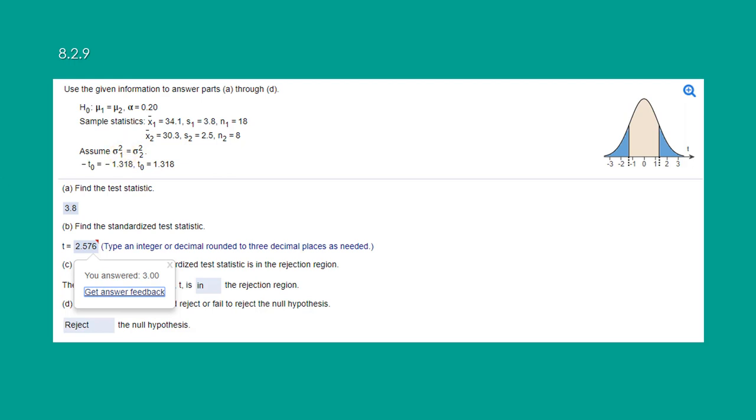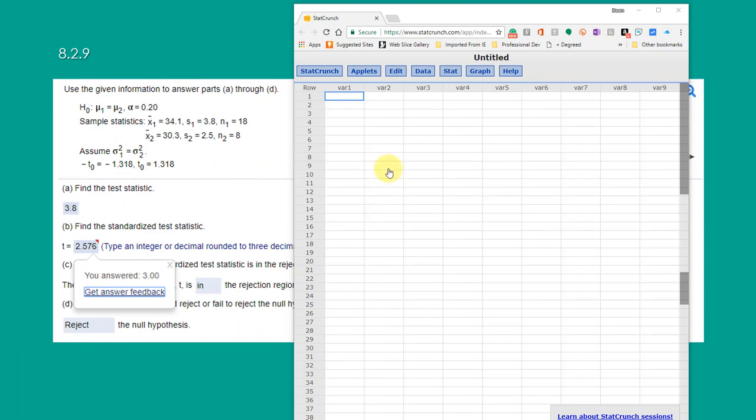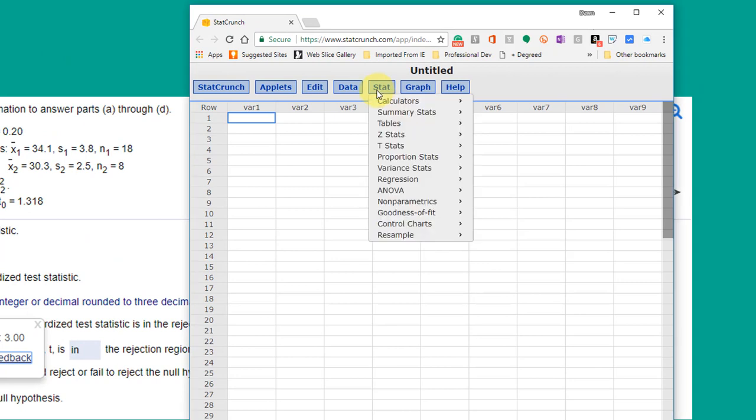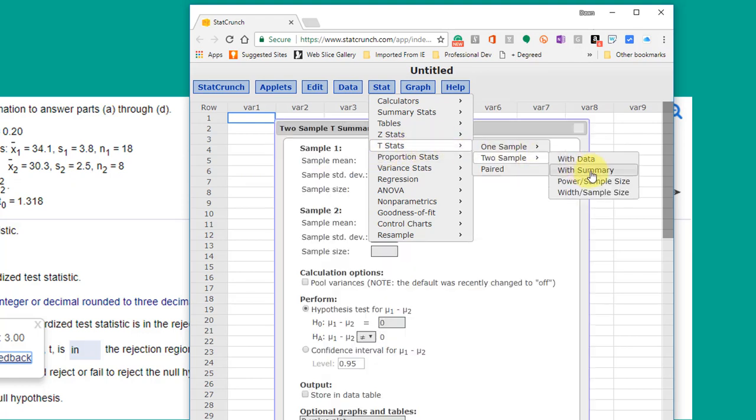Let's look at StatCrunch. I have StatCrunch open for all the hypothesis tests that we run in 233. You would start with Stat, and then you pick either Z Stats or T Stats for these difference of two means. Remember you use T Stats when you don't know the population standard deviation sigma, and here we are not given the two population sigmas. We only have the standard deviations of the samples that we use to approximate them. So we would go to T Stats, and this is a two sample with summary.